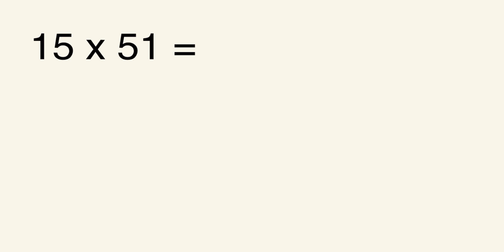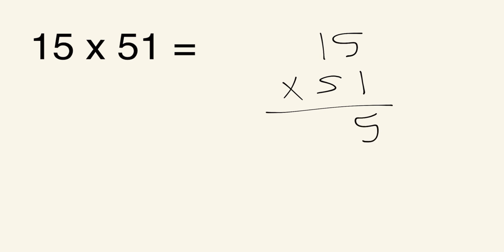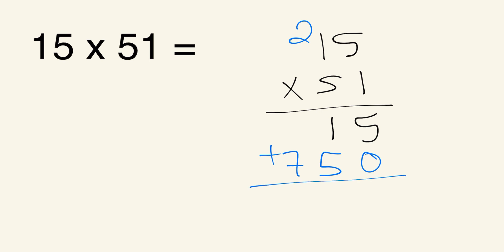Our last example is 15 times 51. Write it vertically. 1 times 5 is 5, and 1 times 1 is 1 — giving 15. Add the 0, then 5 times 5 is 25 — write the 5, carry the 2. Then 5 times 1 is 5, plus 2 is 7 — giving 750. Adding 15 plus 750: 5 plus 0 is 5, 1 plus 5 is 6, bring down 7. So 15 times 51 is 765.